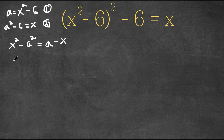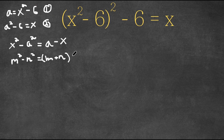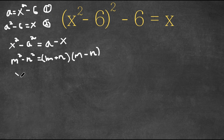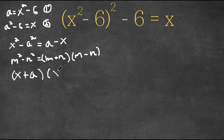Now, if we have something in the form m squared minus n squared, this can also be written as m plus n times m minus n. So x squared minus a squared is equal to x plus a times x minus a.